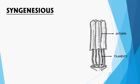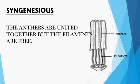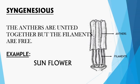The fourth condition is syngenesious. Here the anthers are united together, but the filaments are free. This is different from the previous three conditions — monoadelphous, diadelphous, and polyadelphous — where the filaments are united and the anthers are free. In syngenesious condition, the anthers are united and the filaments are free. Example: sunflower.